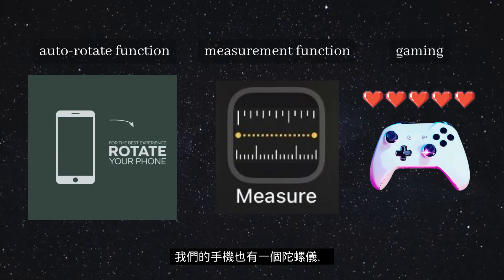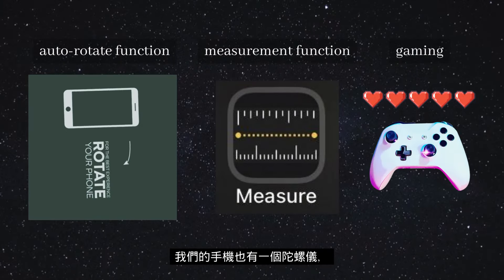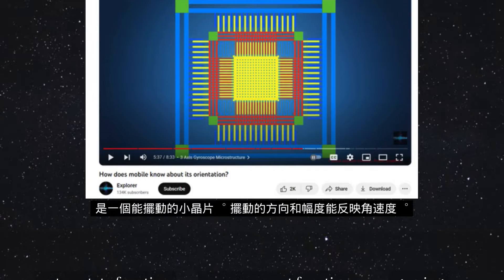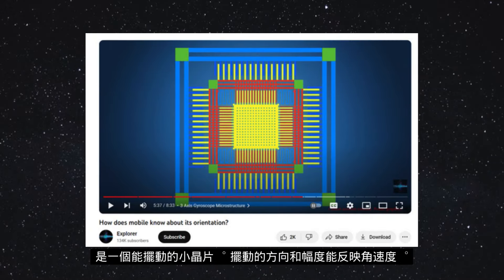A gyroscope is also present in our phones. It is a small chip we can oscillate, and the direction and magnitude reflects the angular velocity.